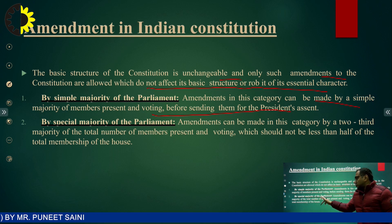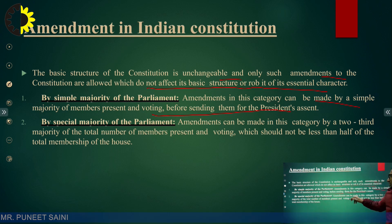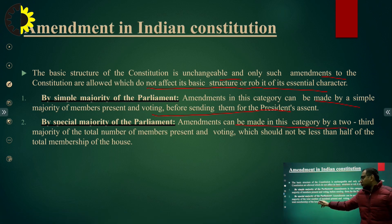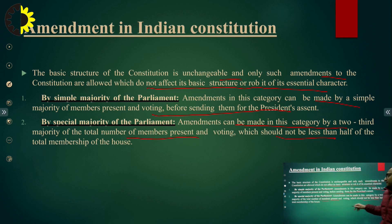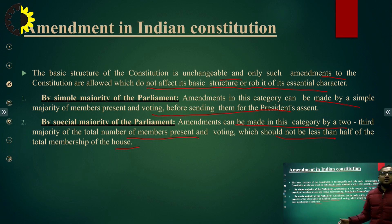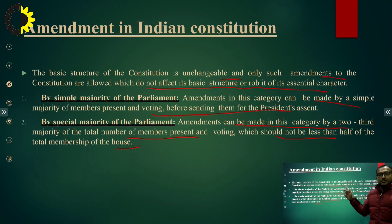The second method is amendment by special majority of the parliament. Amendments in this category require a two-thirds majority of the total members present and voting, and the voting should not be less than half the total membership of the house. Two-thirds of the members of parliament must agree to the amendment, otherwise they can reject it.